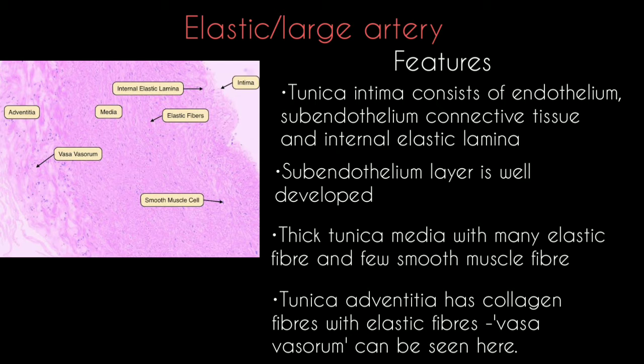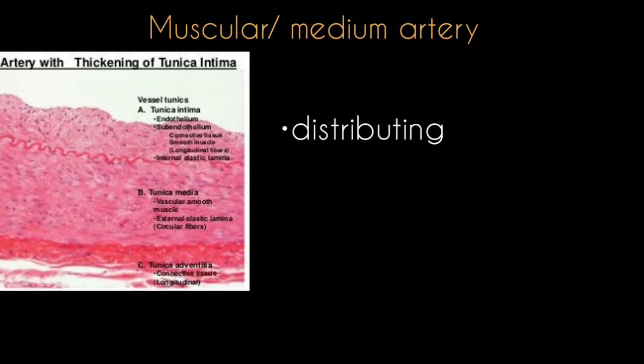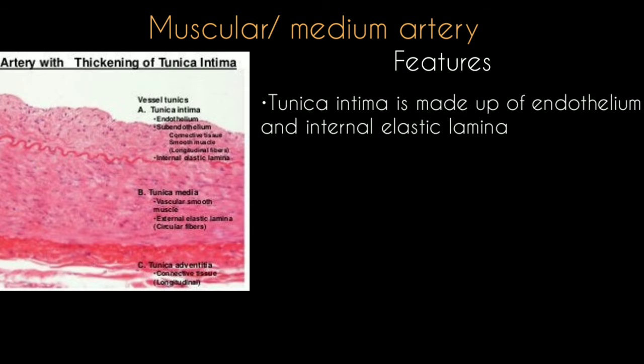The tunica adventitia contains collagen fibers along with elastic fibers. Vasa vasorum can be seen in the tunica adventitia — vasa vasorum are blood vessels that supply blood to these elastic arteries. Muscular arteries are also called medium or distributing arteries.